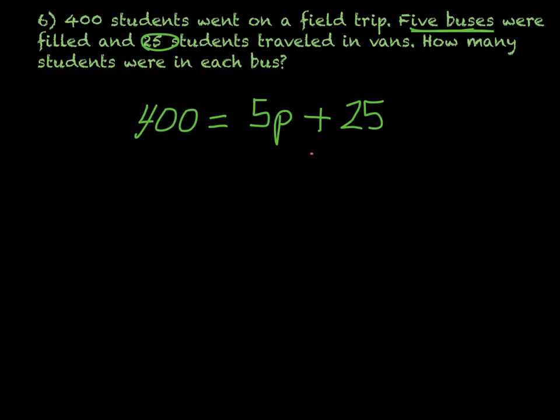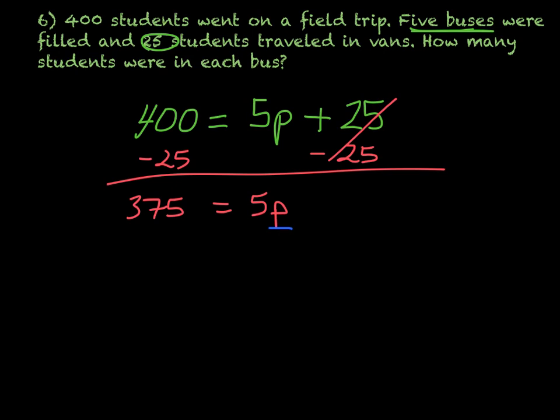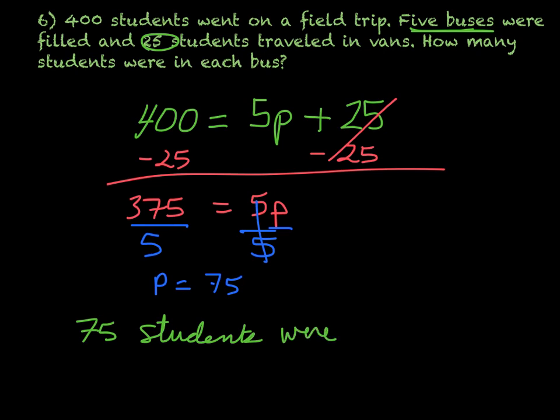Now I'll solve this. Do the opposite of plus 25, which is minus 25. This gives 375 equals 5p. Then divide by 5 to get p by itself. This gives p equals 75. So 75 students were on each bus. That's your final answer.